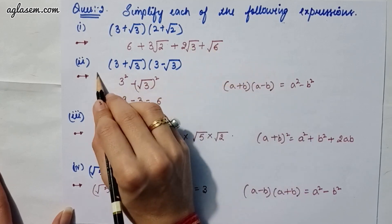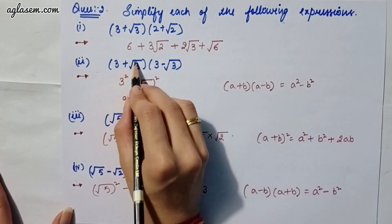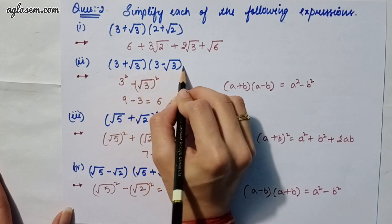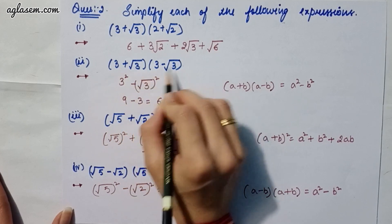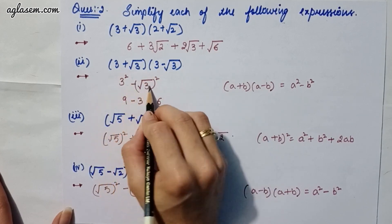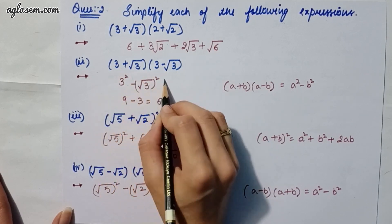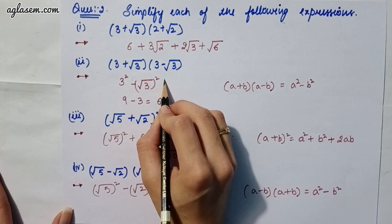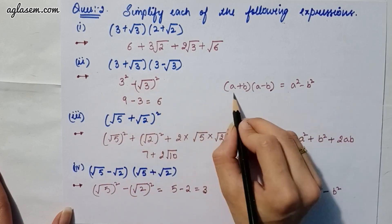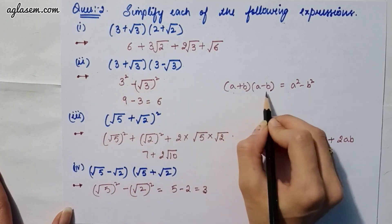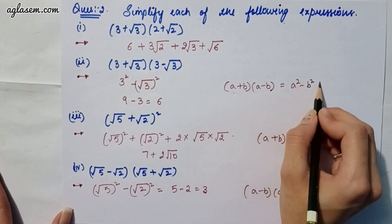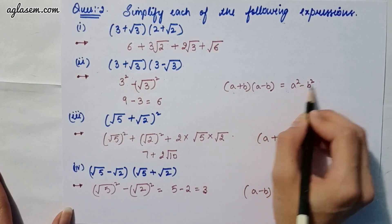Second part says (3 plus root 3) and (3 minus root 3). The answer is 3 squared minus root 3 whole squared. By applying the formula (a plus b)(a minus b), which gives you a squared minus b squared.